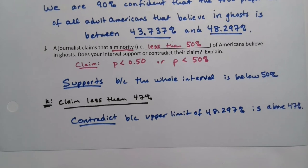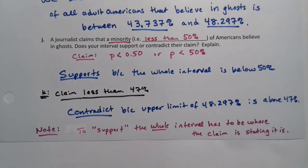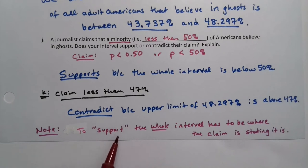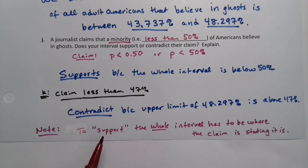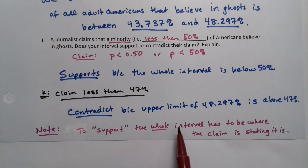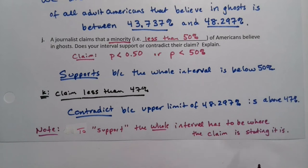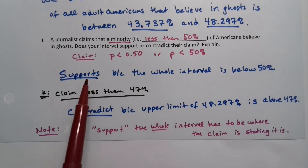So less than 50%, sure — my whole interval is less than 50%, supported. Less than 47%, not so much, because part of my interval is not less than 47%. The whole interval has to be in the region that they're claiming. In order to get your interval to support something, your whole interval has to be where the claim is stating it is.